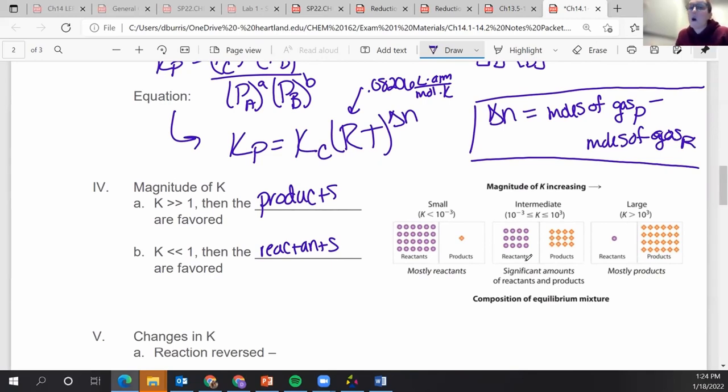Yes, technically anything over one favors the products. But if it's anything between 1,000 and 0.001, there's a significant amount of both reactants and products there. So we kind of have to keep that in mind.